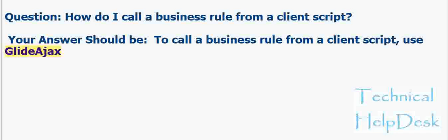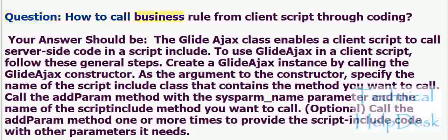Question: How to call a business rule from a client script through coding? Answer: The GlideAjax class enables a client script to call server-side code in a script include. To use GlideAjax in a client script, follow these general steps: Create a GlideAjax instance by calling the GlideAjax constructor. As the argument to the constructor, specify the name of the script include class that contains the method you want to call.